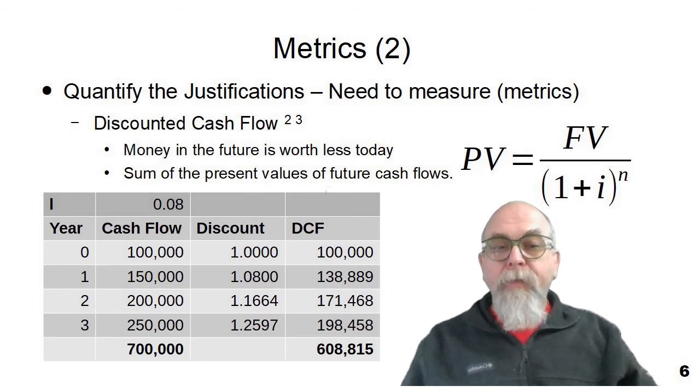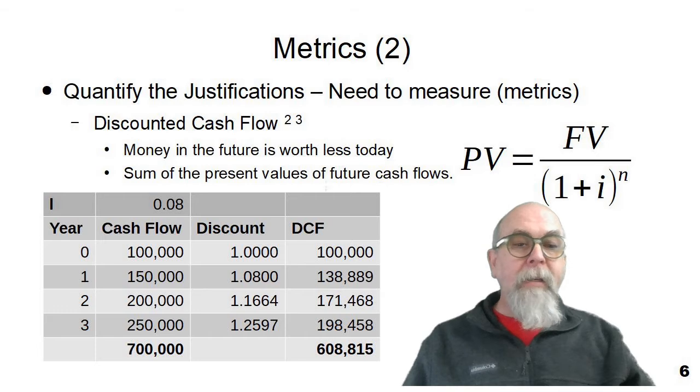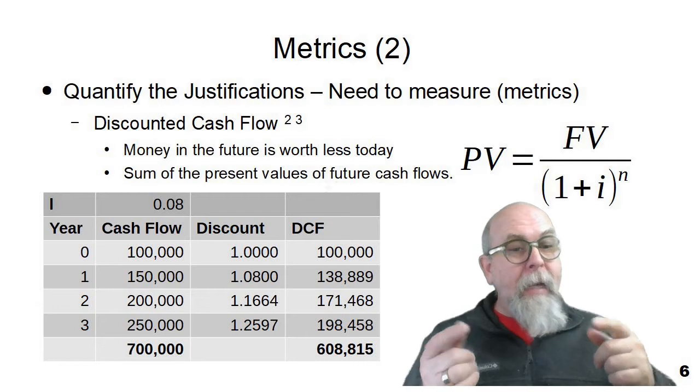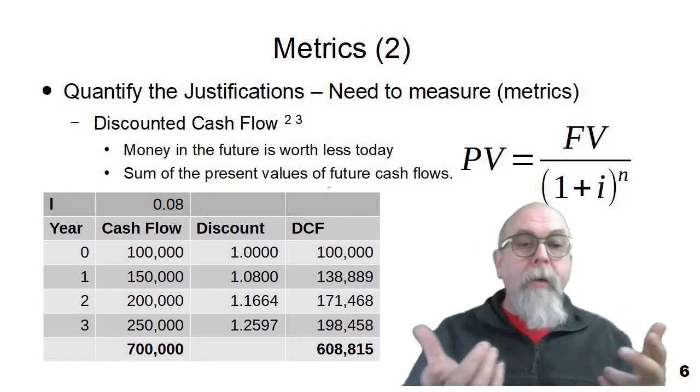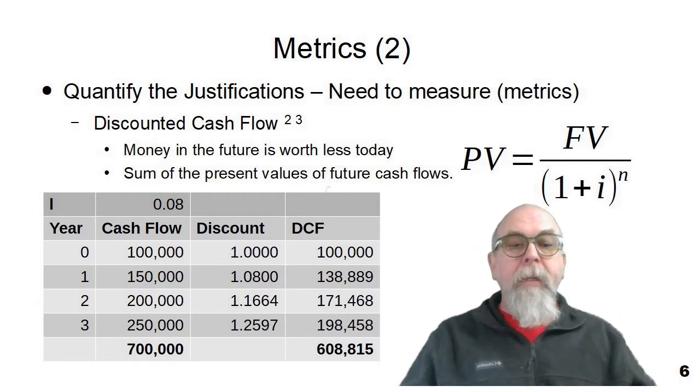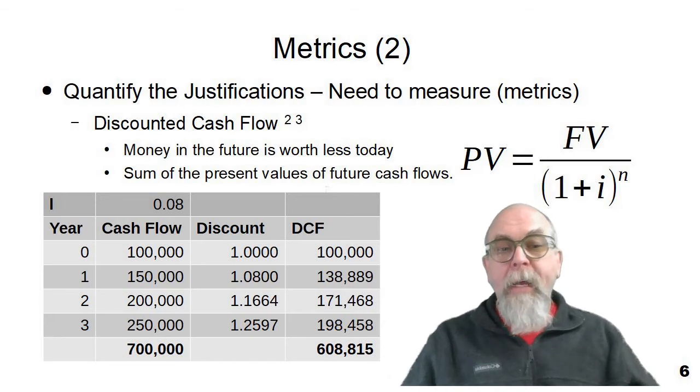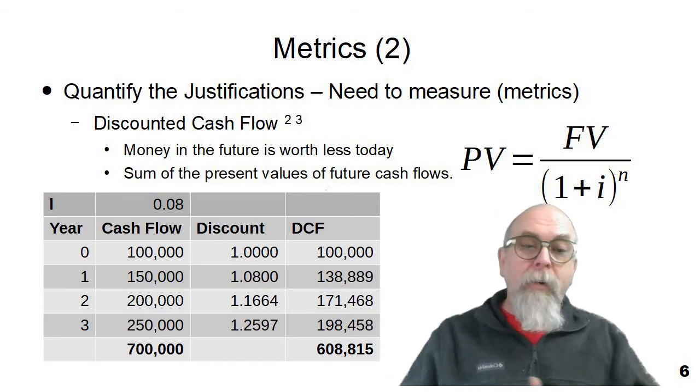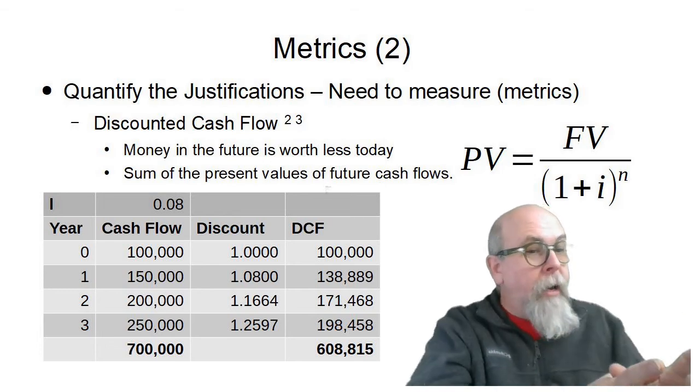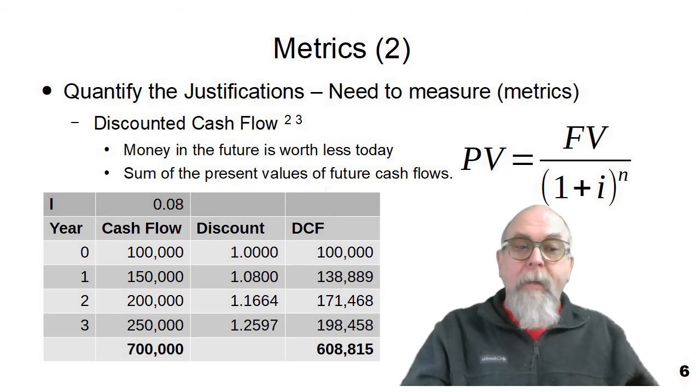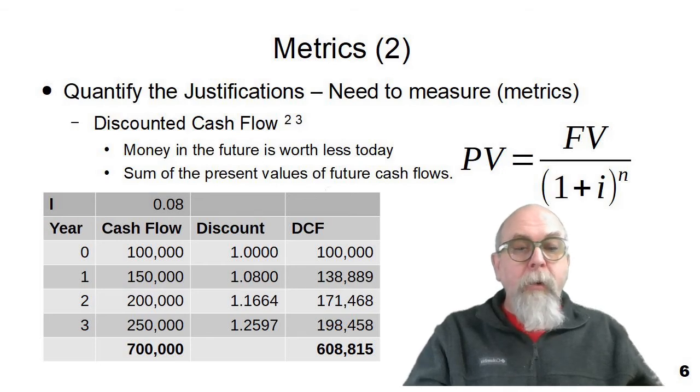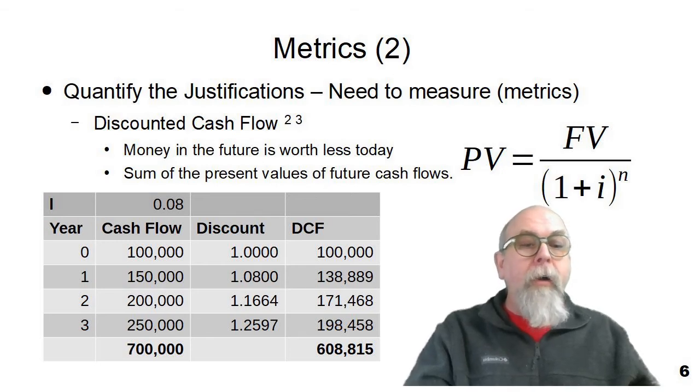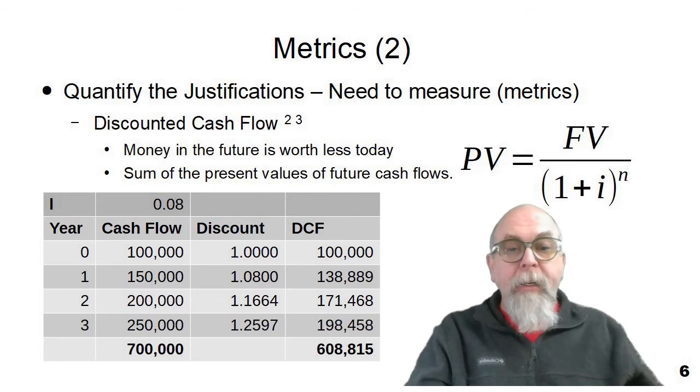We then take the cash flow, divide it by the discount to come up with the discounted cash flow. And you can see that the money we need today is worth what it's worth today. So there's no discount on money today. But the $150,000 we need in one year will only cost us $139,000 today. If we put $139,000 into an 8% investment, we'll have $150,000 at the end of one year.